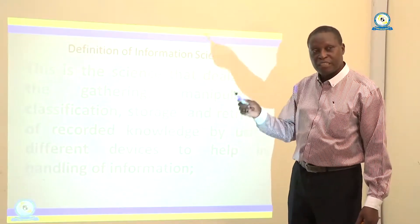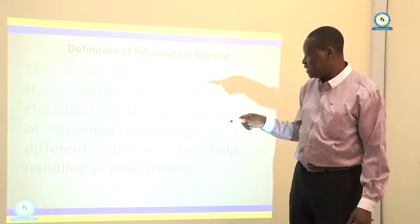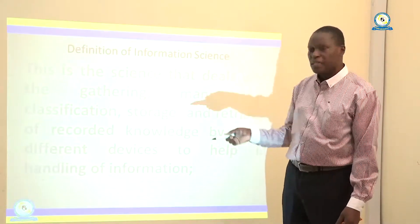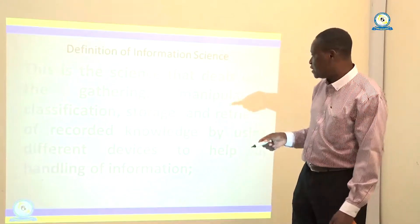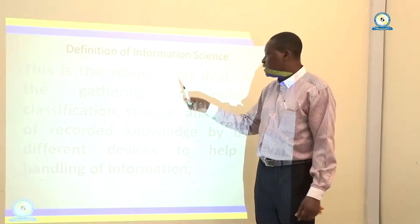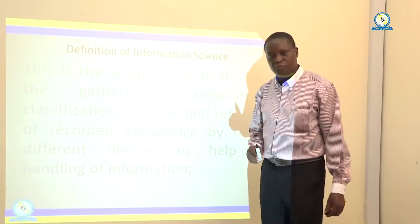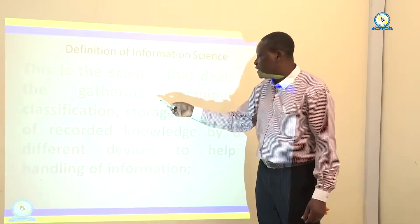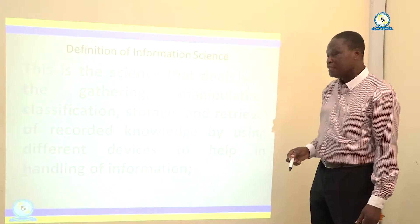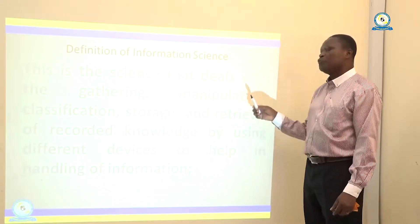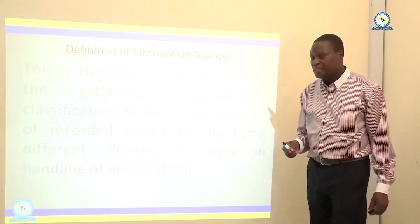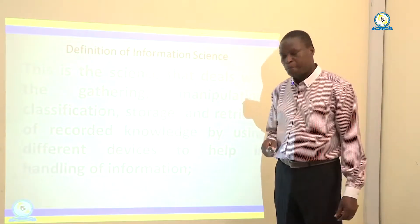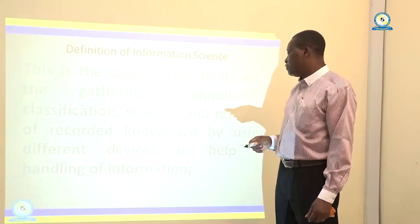You can see the similarities between information science and library science, because both of them deal with information. Both of them deal with the gathering of information, manipulation of information, classification of information, and storage of information.